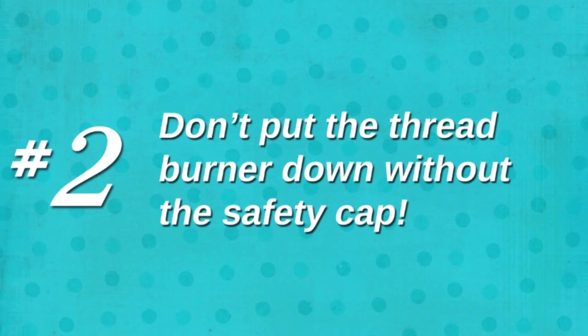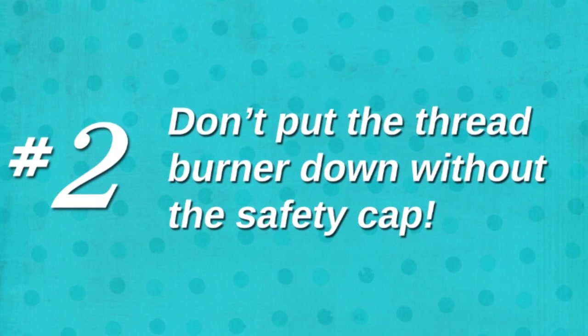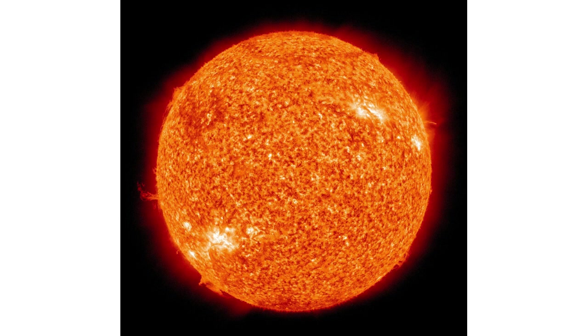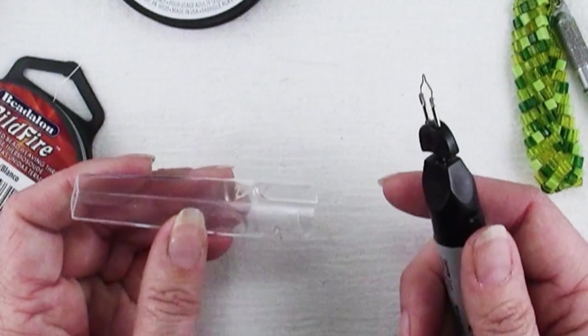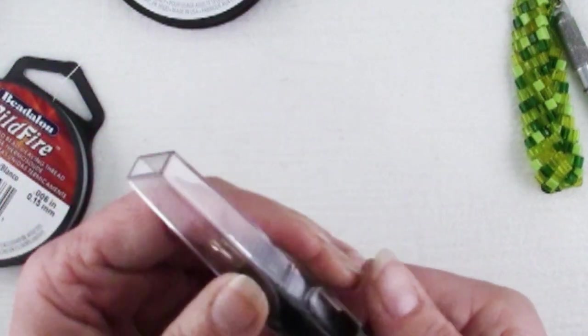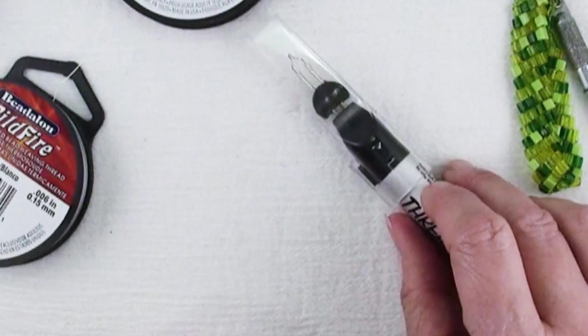The second thing you should never do with a thread burner is put it down without the safety cap on. Did I mention this gets hot? Really hot. It does heat up quickly and it cools off pretty quickly too, but why risk yourself or a loved one or a pet getting burned?